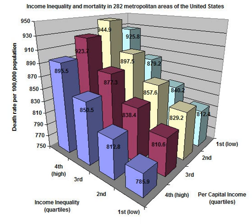It is an approach to health that aims to improve the health of an entire human population. This concept does not refer to animal or plant populations. It has been described as consisting of three components: health outcomes, patterns of health determinants, and policies and interventions.